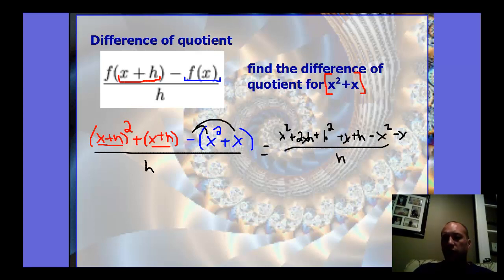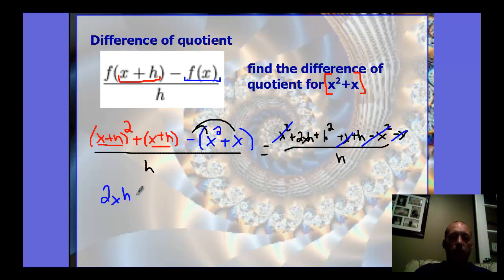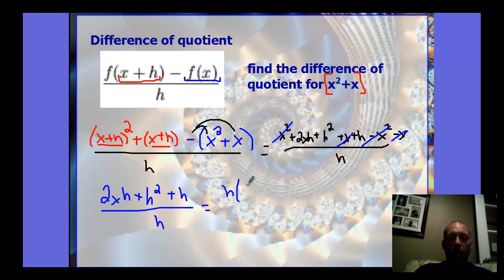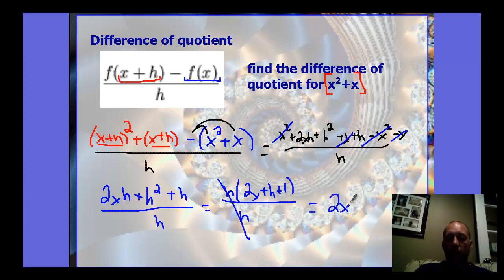Then we have minus x squared minus x when we distribute the negative through the parentheses, all over h. The x squared terms cancel and the x terms cancel. We end up with 2xh plus h squared plus h all over h. The numerator has h in every term, so we factor out h and get 2x plus h plus 1, and the h's reduce to give us 2x plus h plus 1.